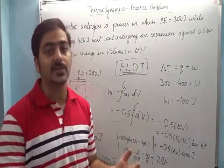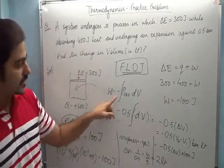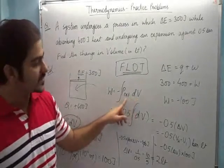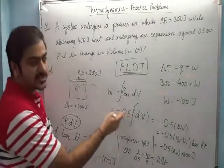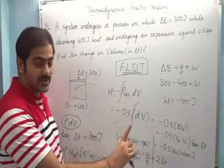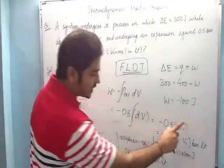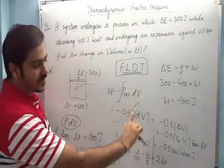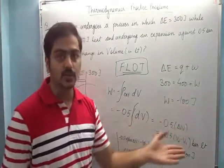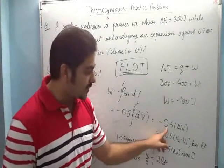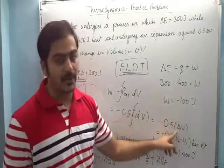And the second method to find work, I applied: work is minus P external dV. P external's value is 0.5 bars. I took 0.5 out from the integration sign because 0.5 is constant. dV we take as delta V. So the answer came as 0.5 into delta V. When calculated by one method, it came as 100. When calculated by the second method, it came as 0.5 into delta V. So these two should be equal.